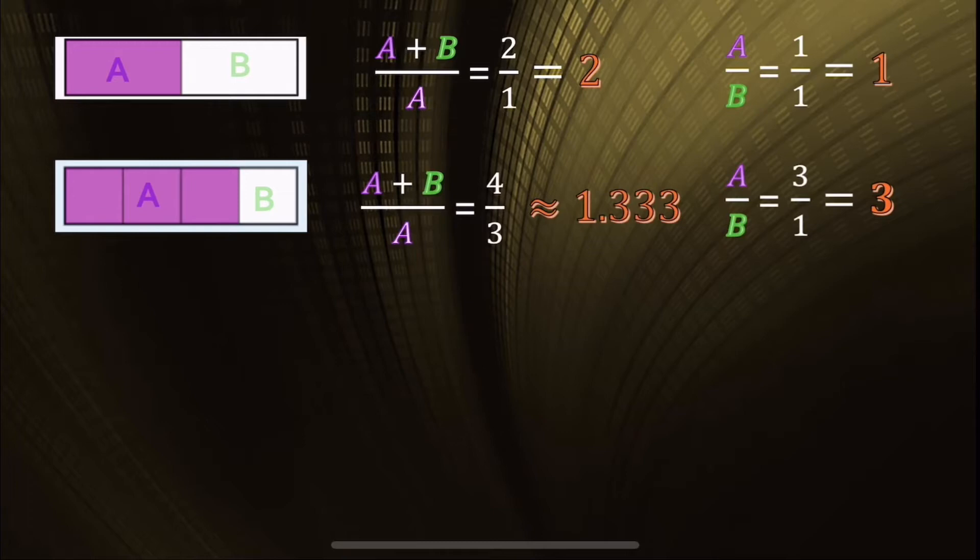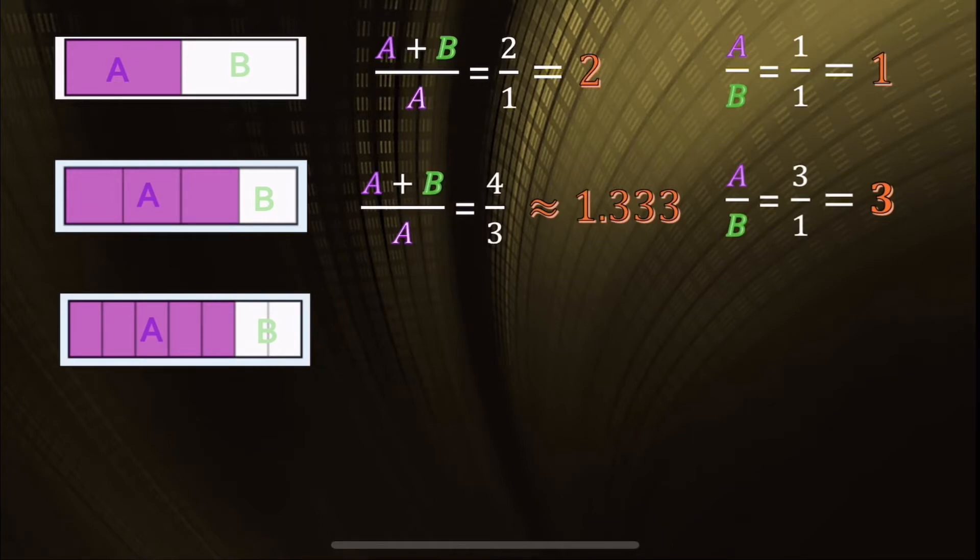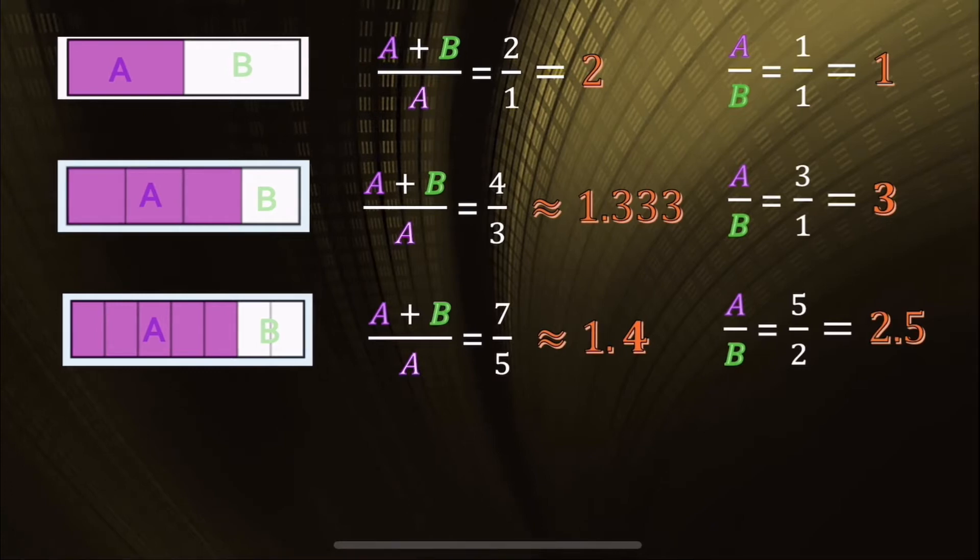So let's try again. So if we cut it here, the ratio of A plus B to A is 7 to 5, and A to B is 5 to 2. Let's give it another shot.